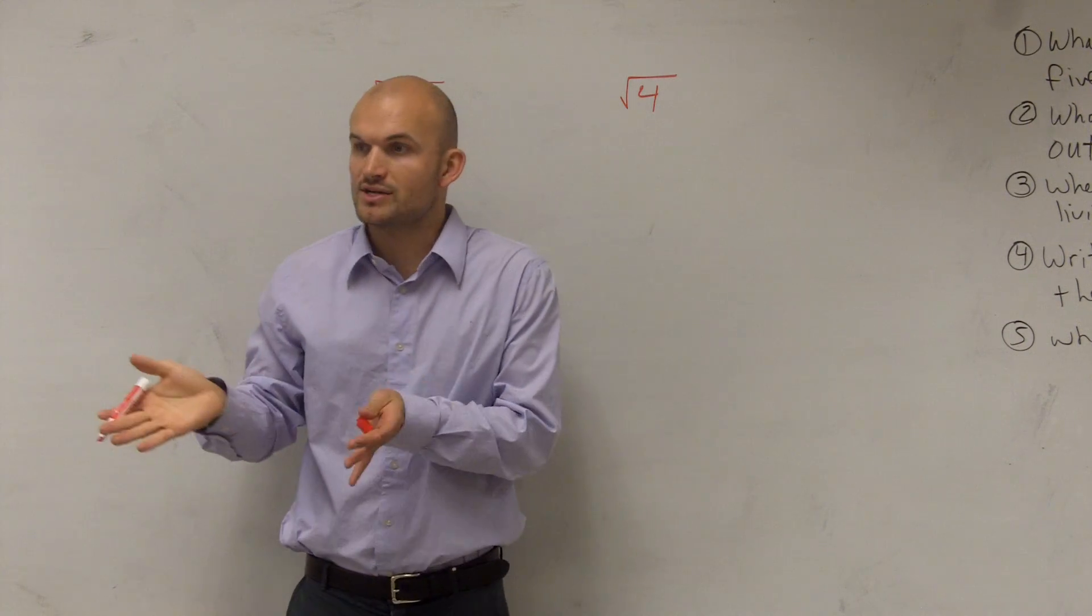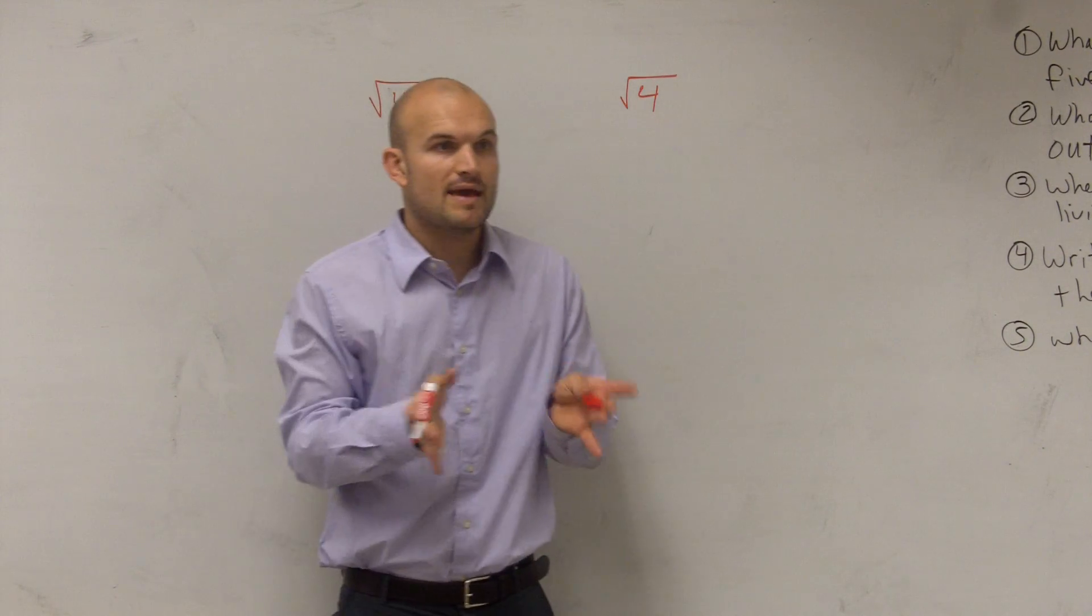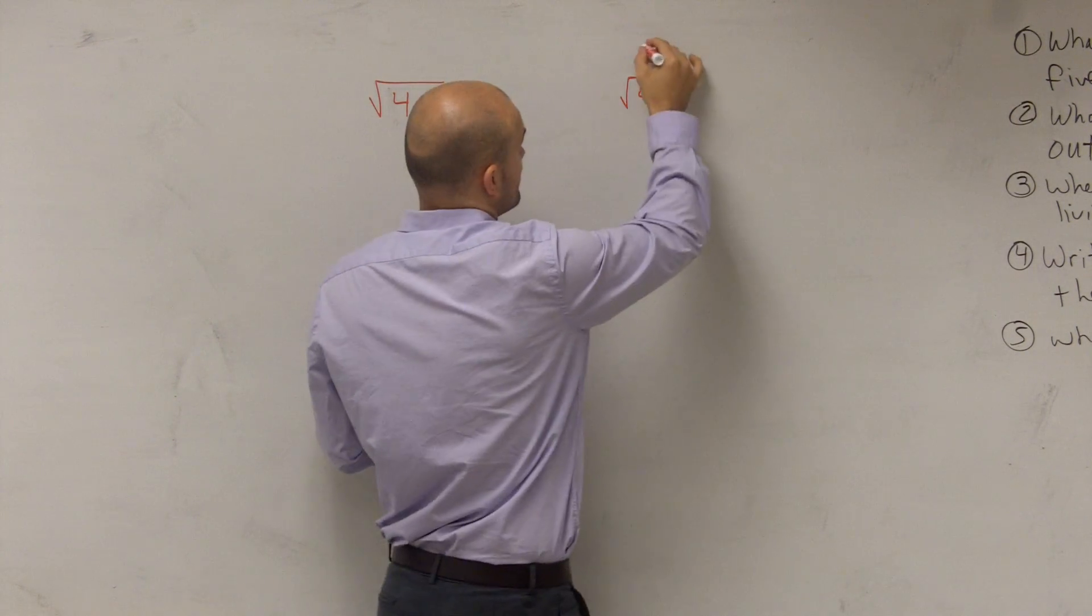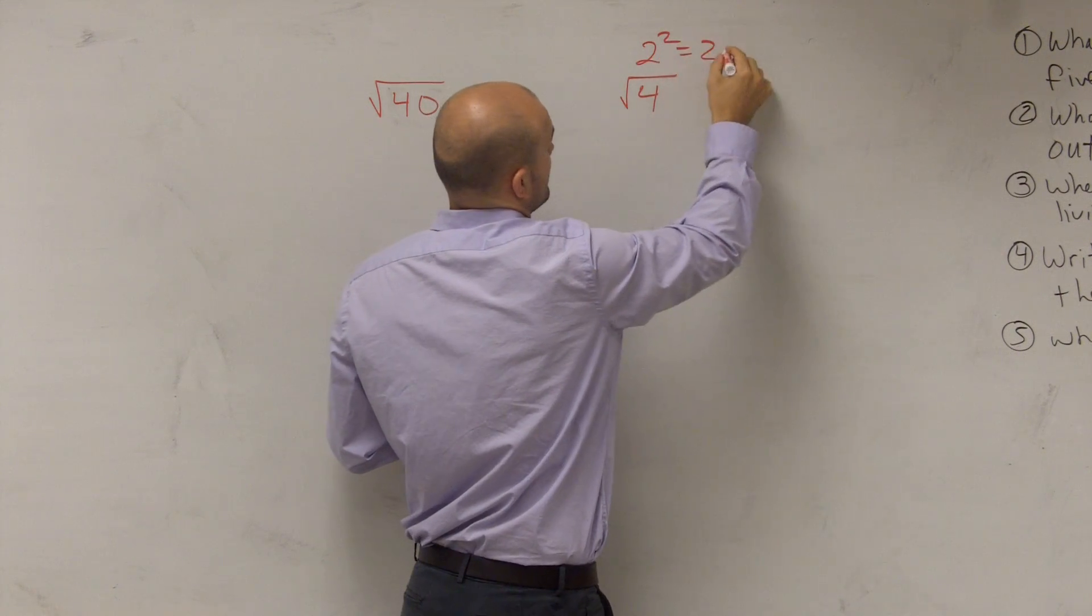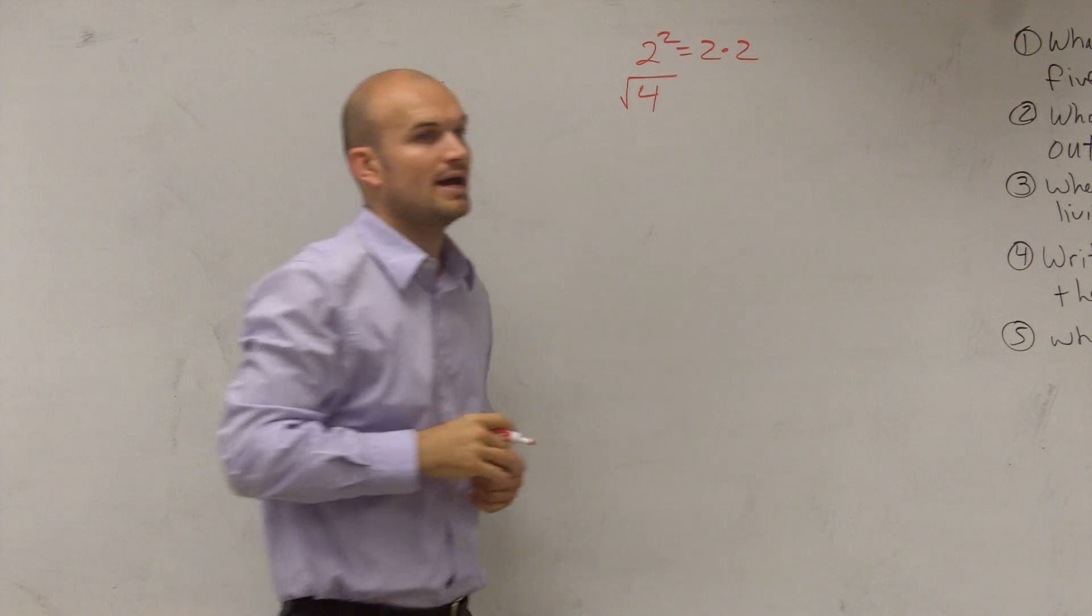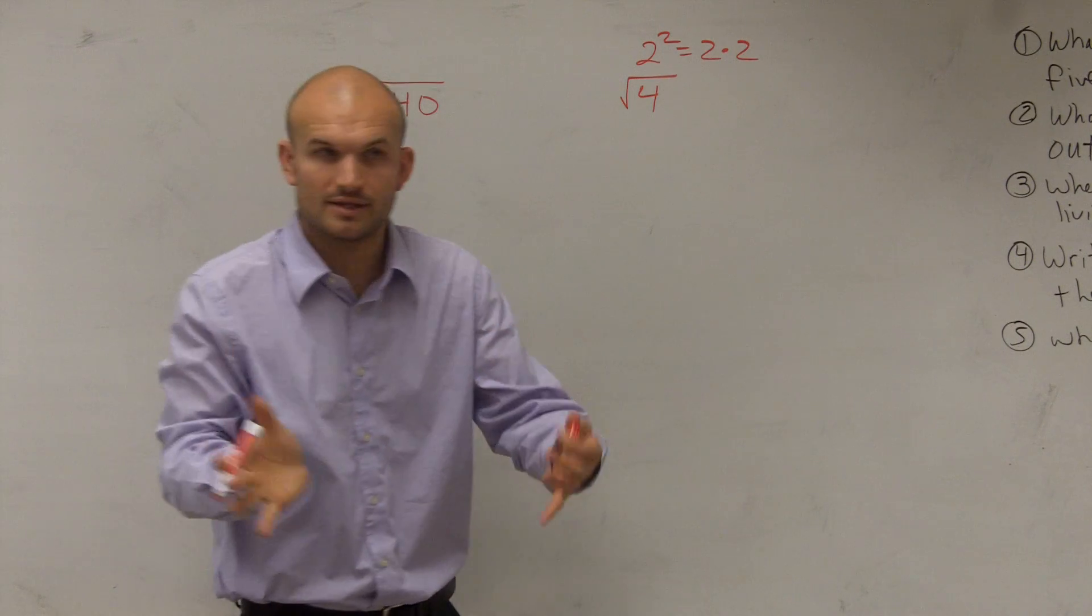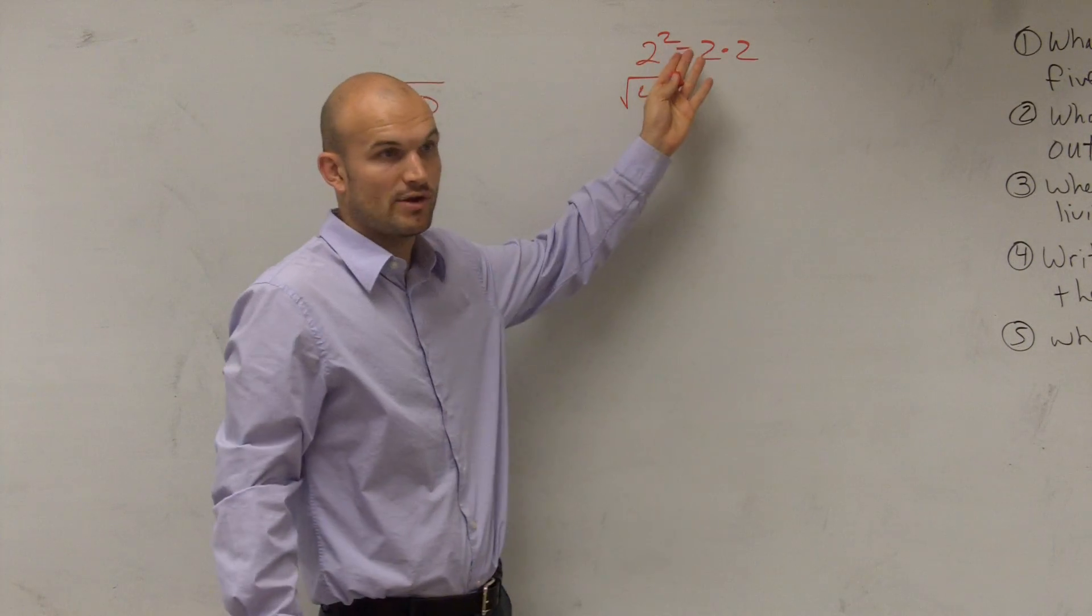Remember, if I say to square something, if I say 2 squared, that means 2 times 2. That means you're going to multiply the number by itself twice. You're going to take the number and multiply by itself twice. That's what square means.